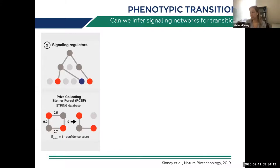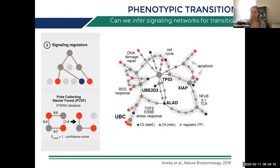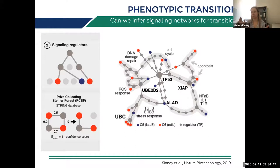Mapping all 27 genes onto the STRING database using the PCSF algorithm, we found that each of the 27 genes were at the end of very different biological processes: some related to apoptosis, some to cell cycle, some to stress responses. All these different processes were captured by the LASSO signature — showing low redundancy. We were then able to connect those back to a core pathway, with P53 at the center.